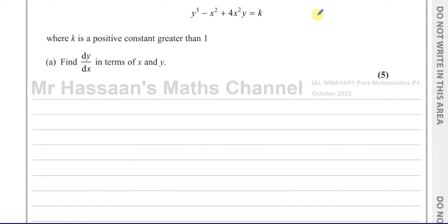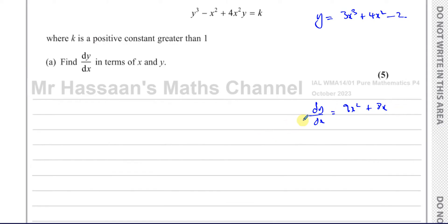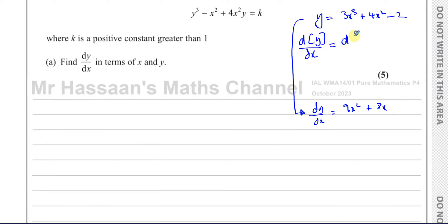When we have y = 3x³ + 4x² - 2, we say dy/dx = 9x² + 8x. What's actually happened is we've differentiated both sides with respect to x. What we did to one side we did exactly the same to the other side.